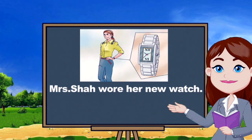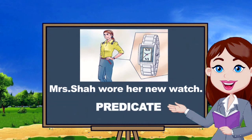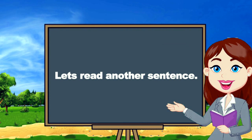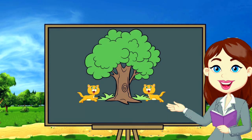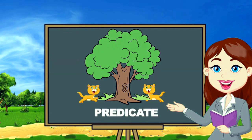Now let's read another sentence: 'Two cats are running around the tree.' What are the two cats doing together? Just think and say what they are doing. Yes, you are correct — they are running around the tree. So that part of the sentence is the predicate.